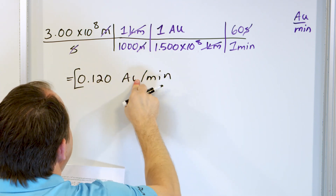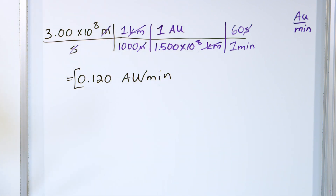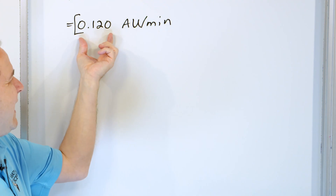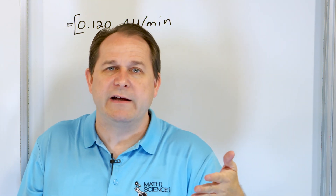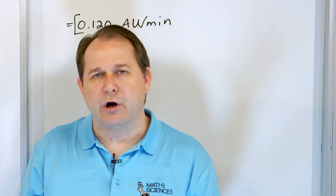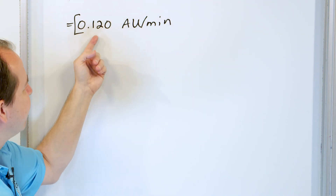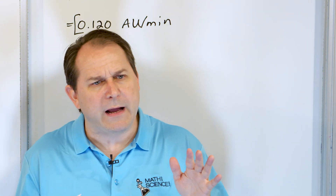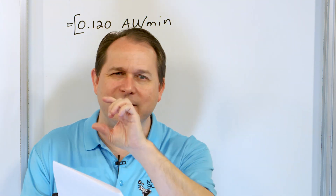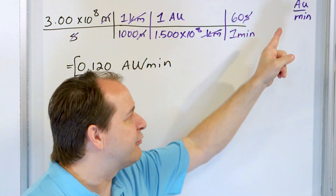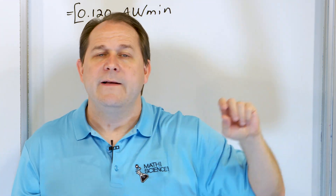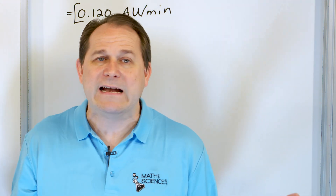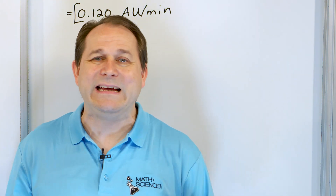That's 0.120 astronomical units per minute — AU is capital A, capital U. An AU is roughly the distance from Earth to the Sun, so the speed of light is about 0.1 AU, just over 10% of that distance, per minute. You can see we never had to guess whether to multiply or divide. Just write the units down, let the units dictate where you're trying to go, and cancel appropriately. You can solve some pretty complex problems just by knowing what the units are and where you need to go.